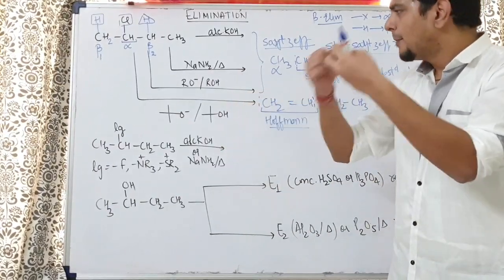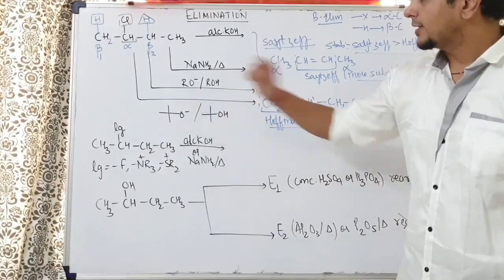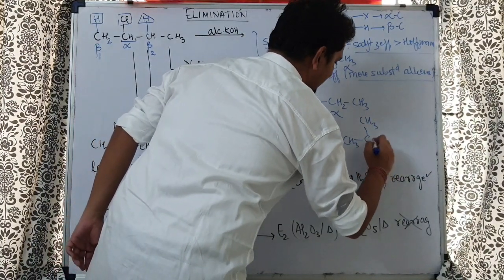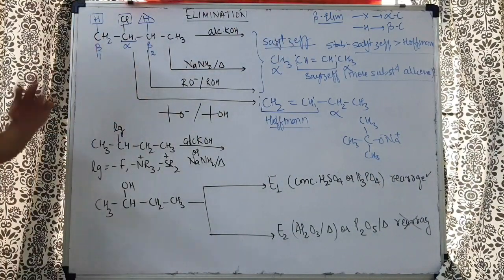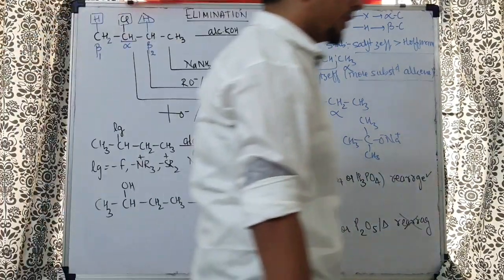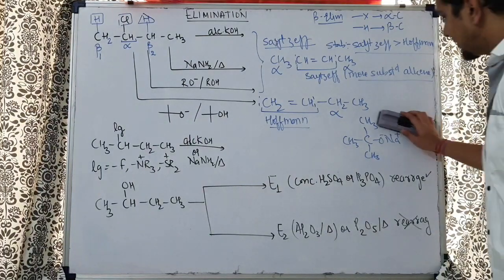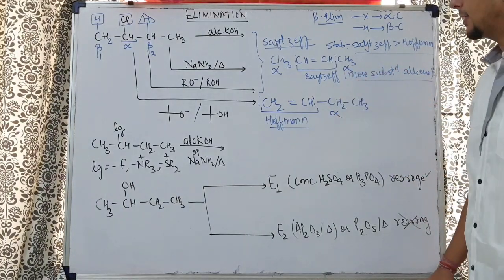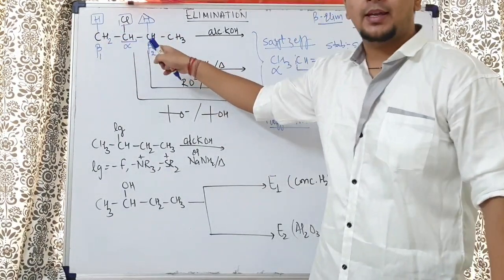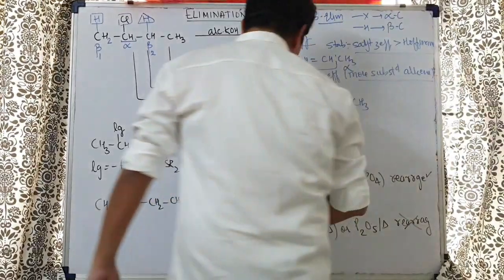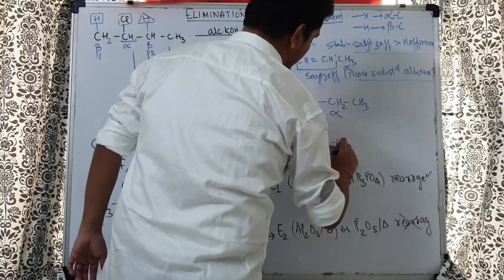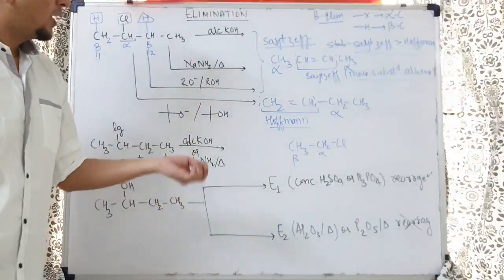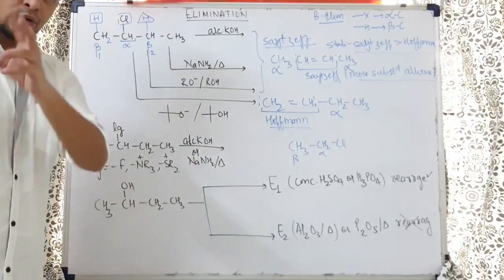Marks will come directly by knowing this. Tertiary butoxide — I am making the structure on the board — gives the Hoffman product, whereas alcoholic KOH, NaNH2, and RO⁻ give the Saytzeff product. One more important point: there are compounds where only one beta carbon exists, for example CH3CH2Cl. Here, alpha is this carbon and beta is only one, so there is no question of Saytzeff or Hoffman — both eliminating agents will give the same product.